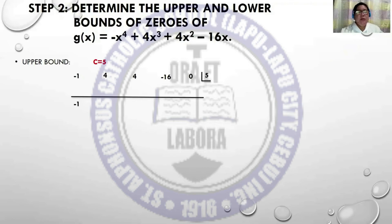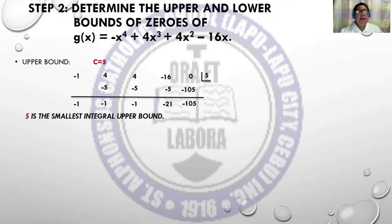Using synthetic division with c = 5: bring down -1. -1 times 5 is -5. Combined: -1. -1 times 5 is -5. Result: -1. -1 times 5 gives -21. -21 times 5 is -105, and the result is -105. Therefore, 5 is the smallest integral upper bound, as all values are negative since the leading coefficient is negative.